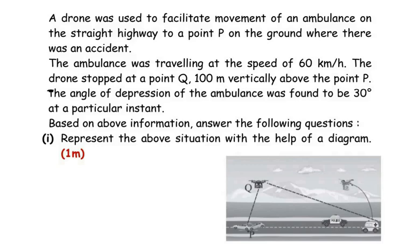A drone was used to facilitate movement of an ambulance on a straight highway to a point P on the ground where there was an accident. The ambulance was travelling at the speed of 60 km per hour. The drone stopped at a point Q, 100 meters vertically above the point P. The angle of depression of the ambulance was found to be 30 degrees at a particular instant. Based on the above information, answer the following questions.